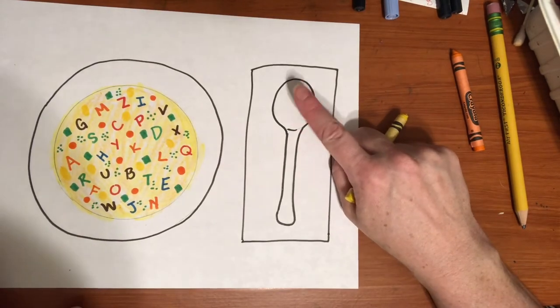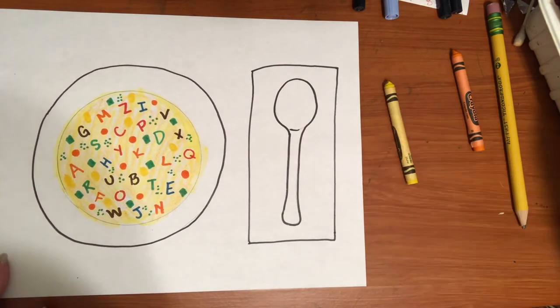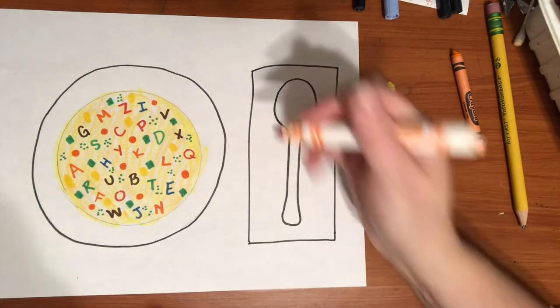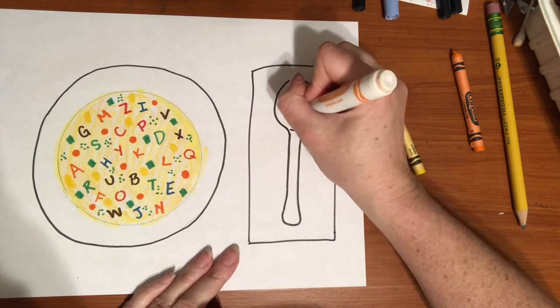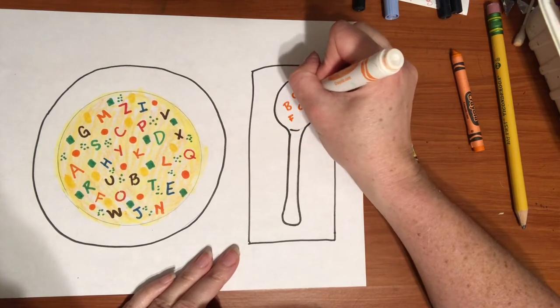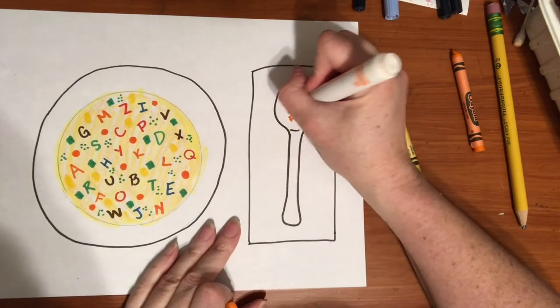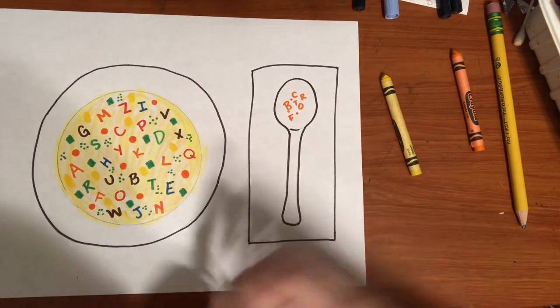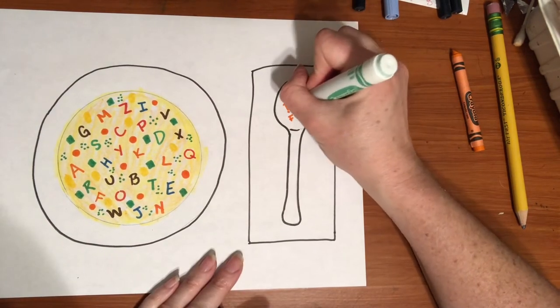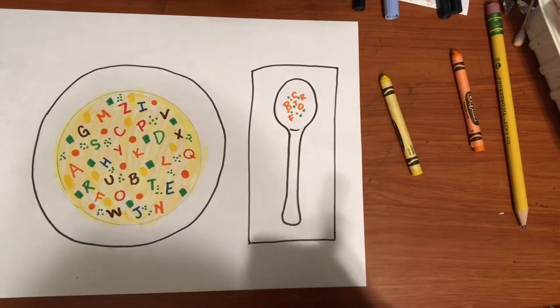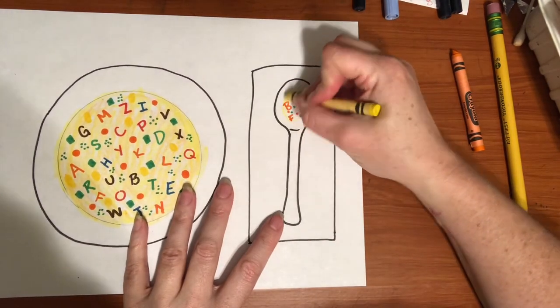You could leave your spoon blank like this, or you could even put a little bit of soup in the spoon. Like I could put some different letters and maybe just some different little pieces in there. And then I'm going to use that yellow and show the soup in the spoon.